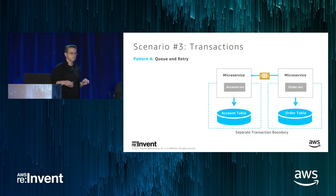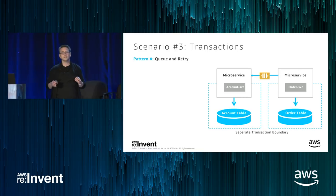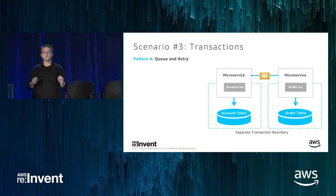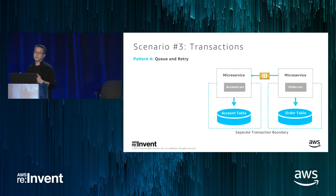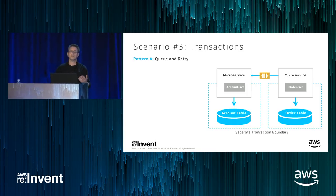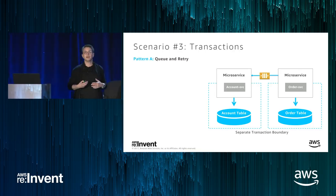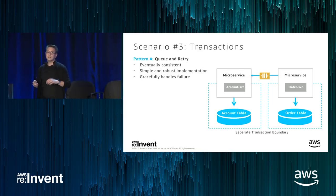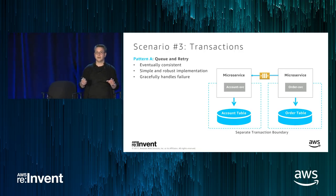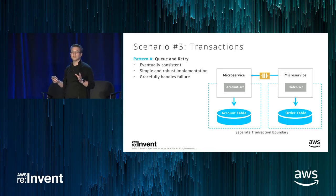There are several approaches to implement transactions in a microservices world. The first: if you don't need transactional consistency and eventual consistency is sufficient, a queue-and-retry approach is very effective. Once we place the order, we put a message on a queue that the account service reads from and applies to the account table. This approach is eventually consistent, simple, and robust — it handles failures gracefully. This is a very common pattern, though notice we didn't really implement a transaction — it's more of a synchronization.